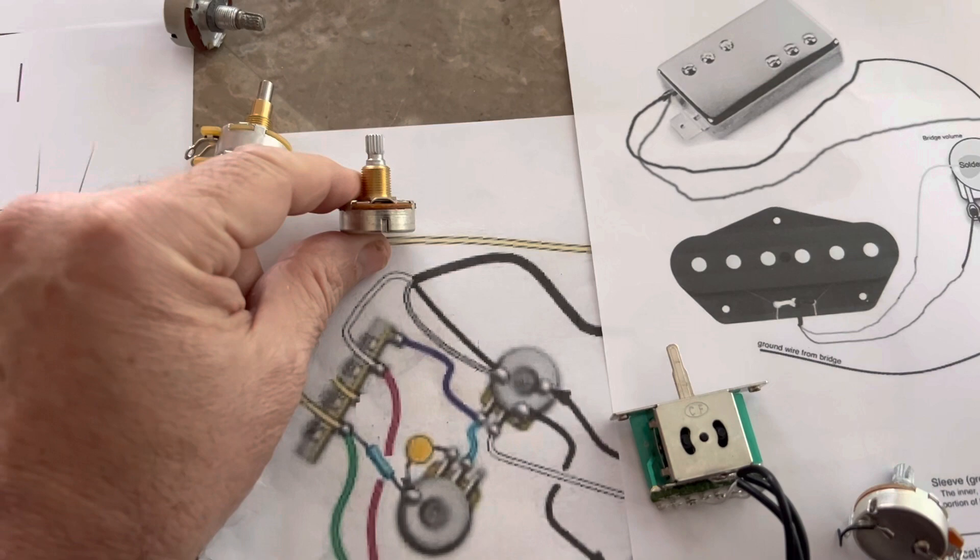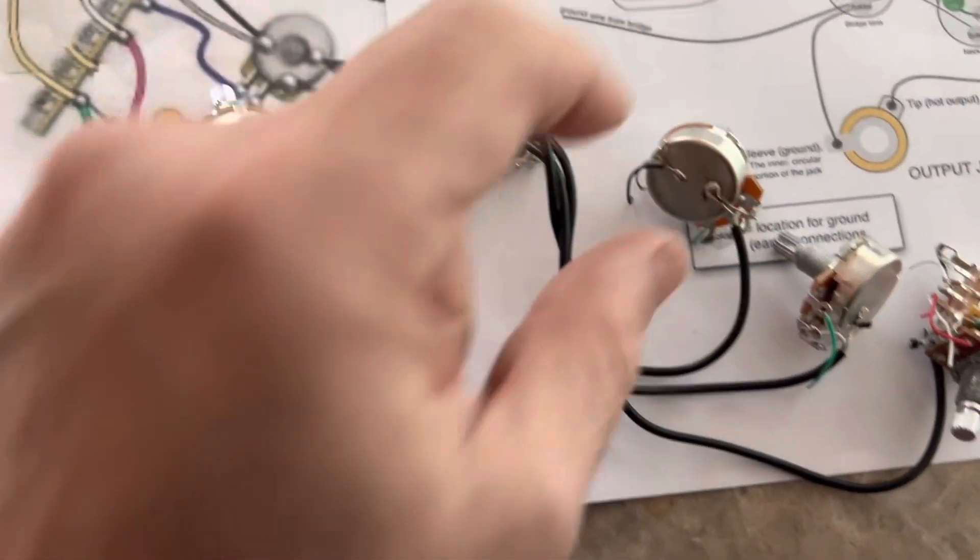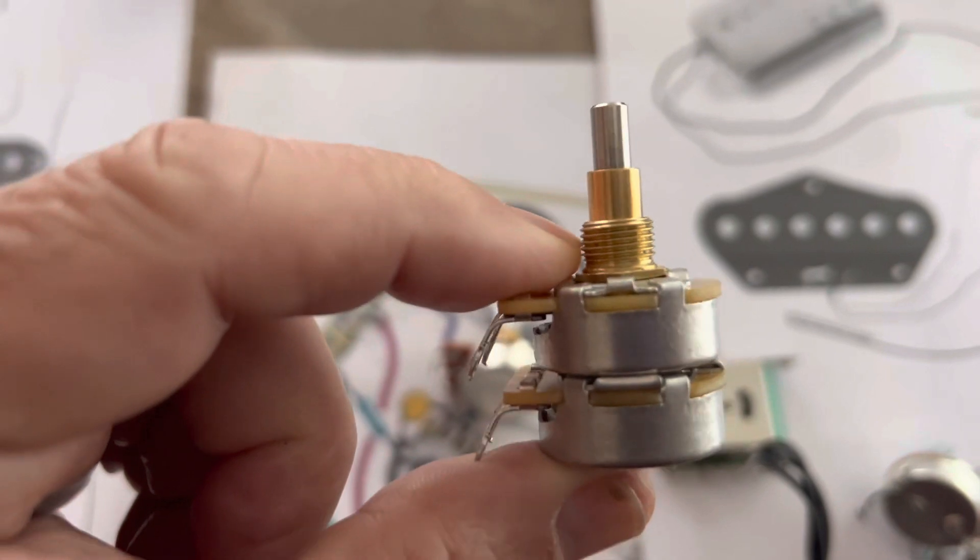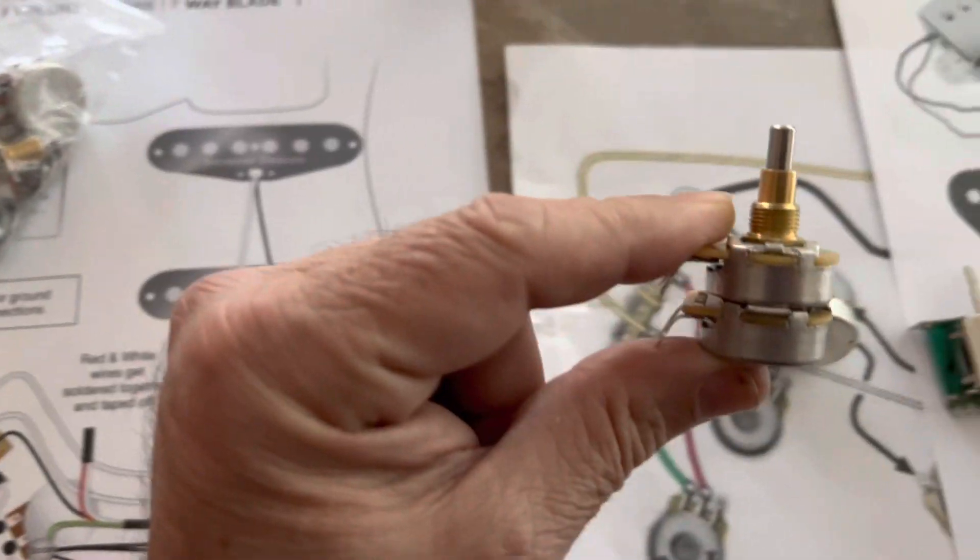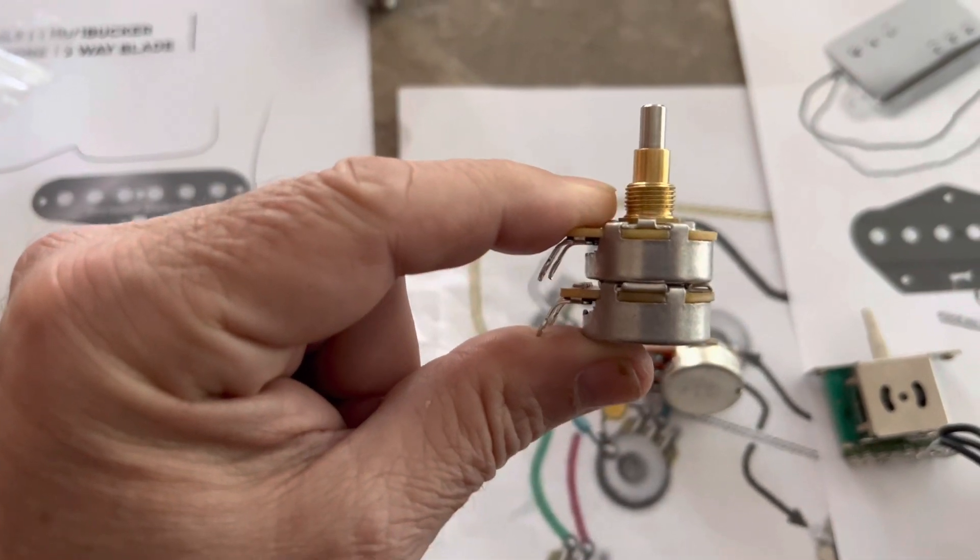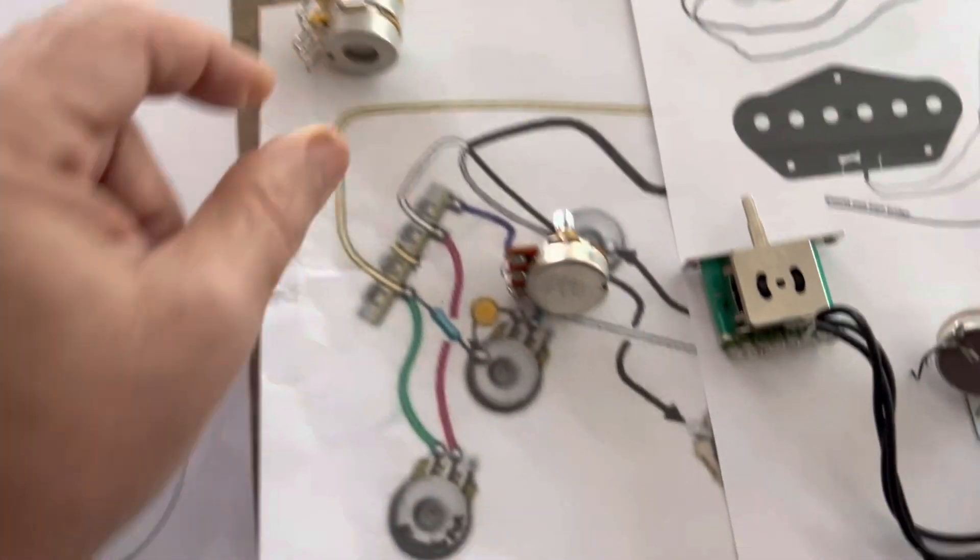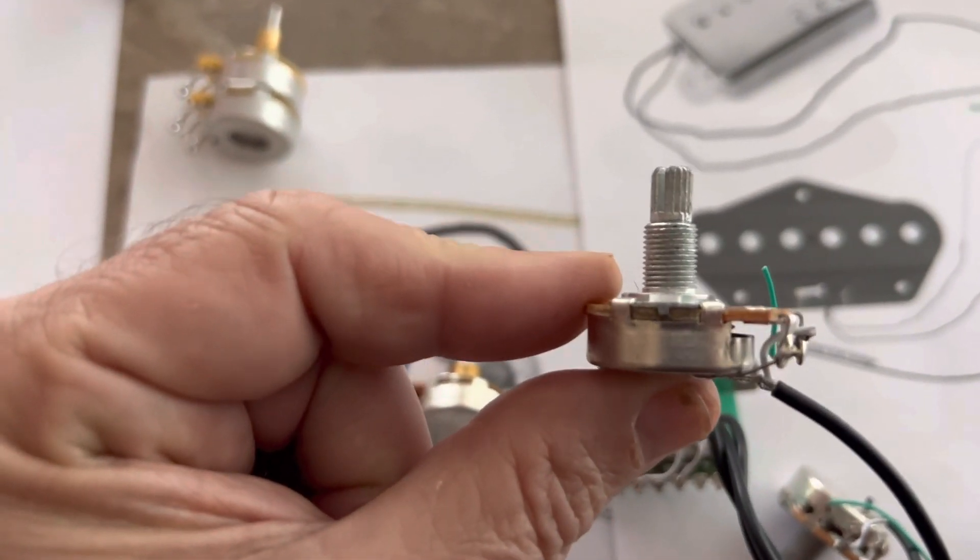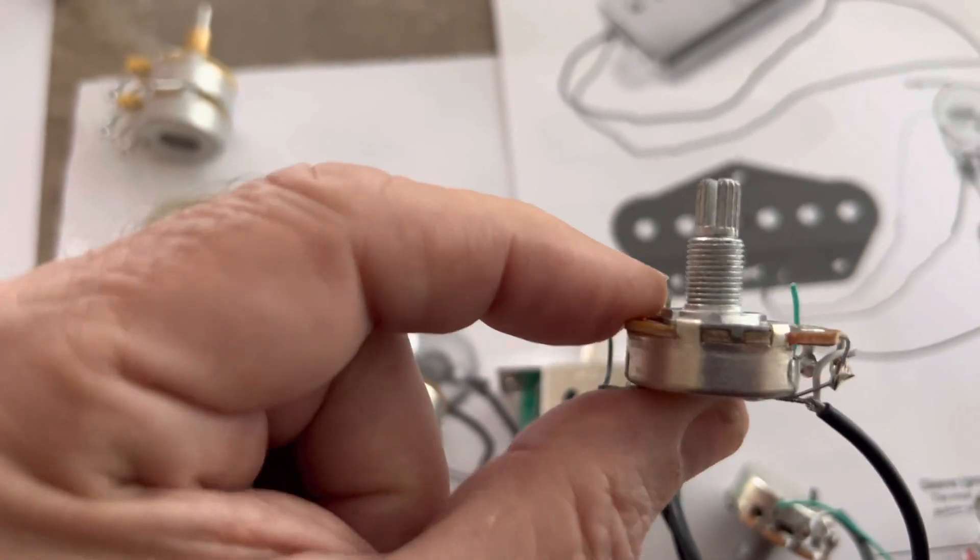First of all, you have to know what you're buying. A Stratocaster has a short thread length because it only has to fit through the pickguard on a guitar, so those are short shafts like that. Other guitars that go through the body have like a half an inch worth of thread. So first of all, you have to buy the right pot.